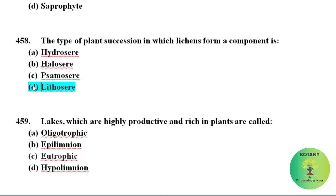In lithosere, the succession starts from rocks. Lakes which are highly productive and rich in plants are called eutrophic lakes.